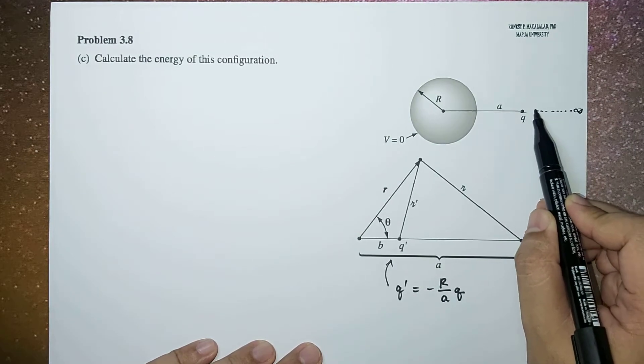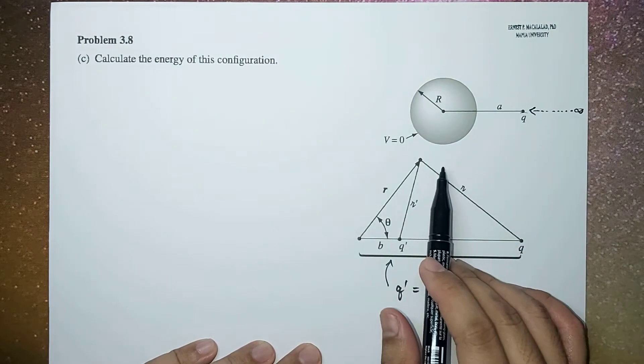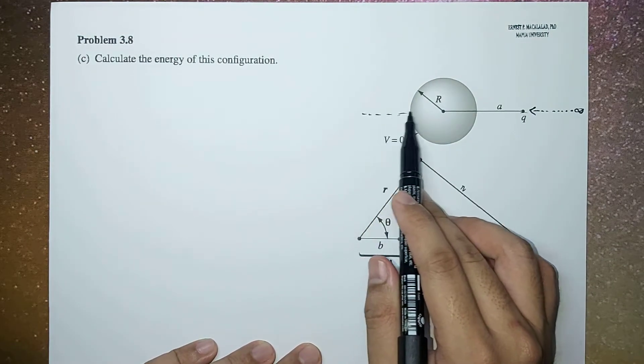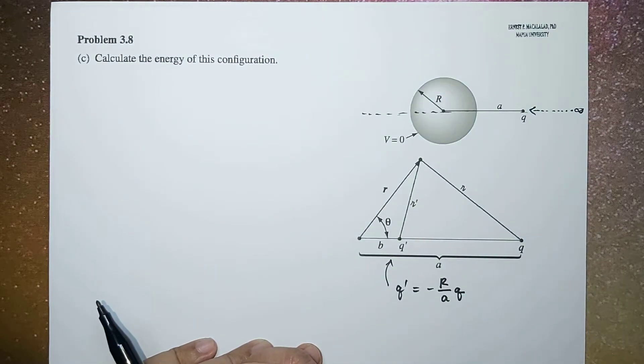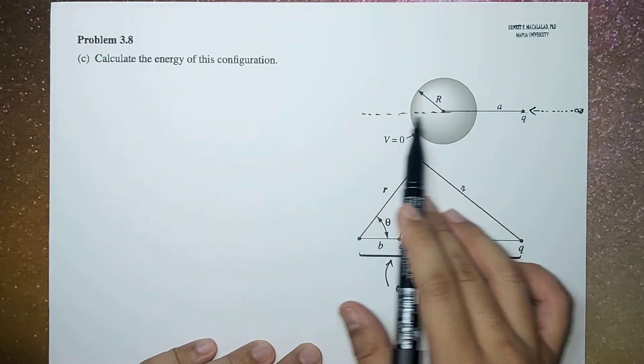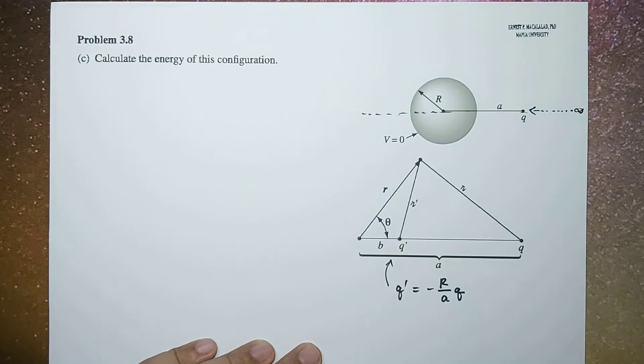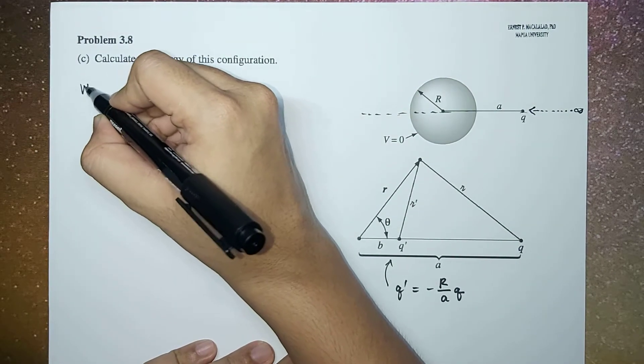Because of symmetry we can use this axis to be our coordinate of integration. So the energy of this configuration is equal to the work done to bring q from infinity to a.